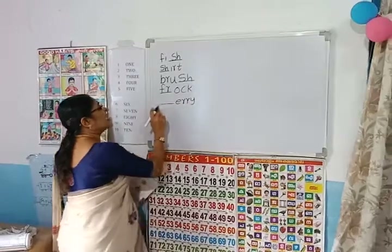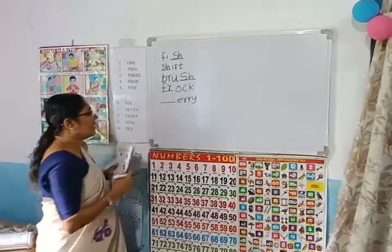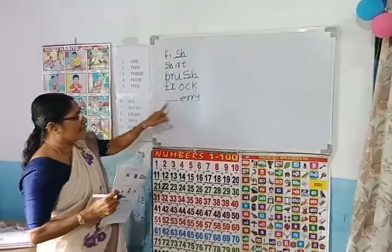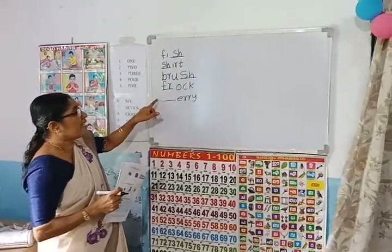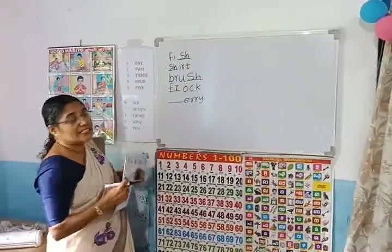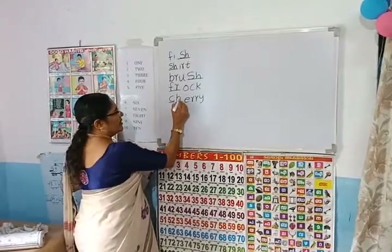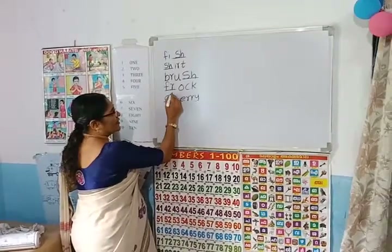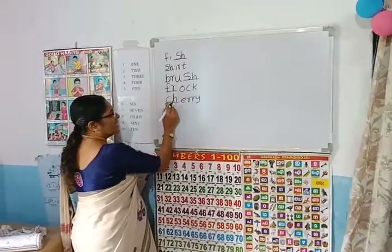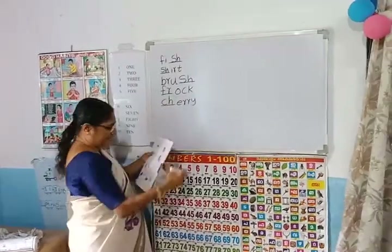Which letter comes here? Look. E, R, R — which comes here? Ch — C, H. C, H, E, R, R, Y — cherry. Cherry.